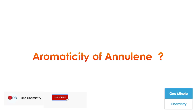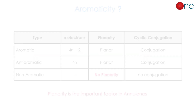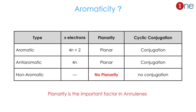Welcome to One Chemistry. This is the One Minute Chemistry series. We are going to quickly see the aromaticity of annulene compounds. First, let us quickly see what aromaticity is. Aromaticity is normally defined by pi electron count, planarity, and conjugation.